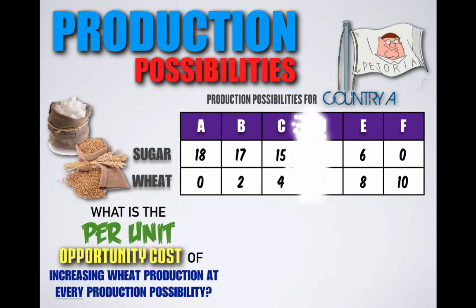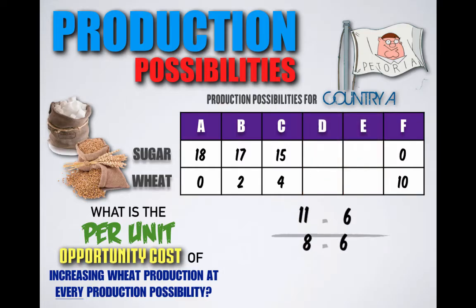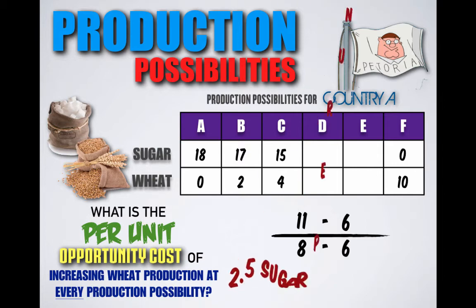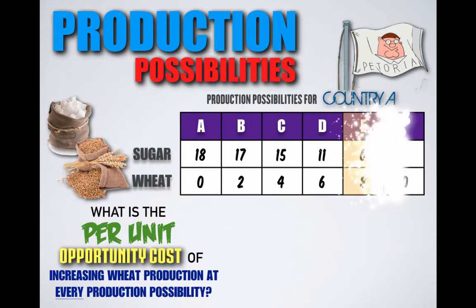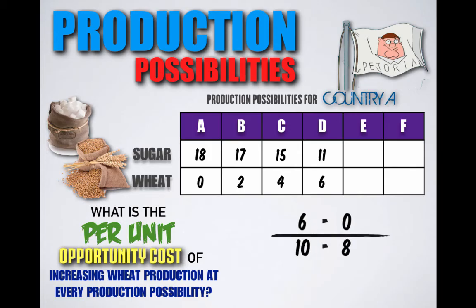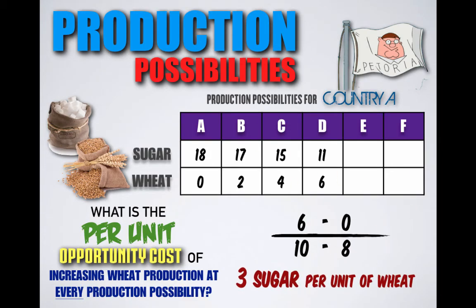Shifting from combination D to combination E, Petoria decreases sugar from 11 units to 6 units but increases wheat from 6 to 8 units. Petoria gives up 5 units of sugar but gains 2 units of wheat, so for every unit of wheat gained, Petoria gives up the potential to produce 2.5 units of sugar. Shifting from E to F, Petoria decreases sugar from 6 units to 0 but increases wheat from 8 to 10 units. By losing 6 units of sugar while gaining 2 units of wheat, for every unit of wheat gained, Petoria gives up the potential to produce 3 units of sugar.